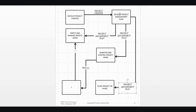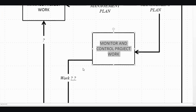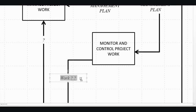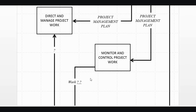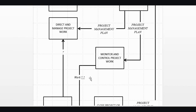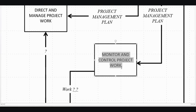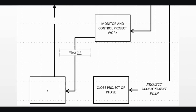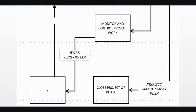So we've got the project charter going in here, and the project management plan coming out of these. Now the big question is: what comes out of Monitor and Control Project Work that has 'work something something'? There are some possibilities — it could be work performance data, it could be work performance information, or it could be work performance reports. You do need to know your WPD, WPI, WPR sequence.